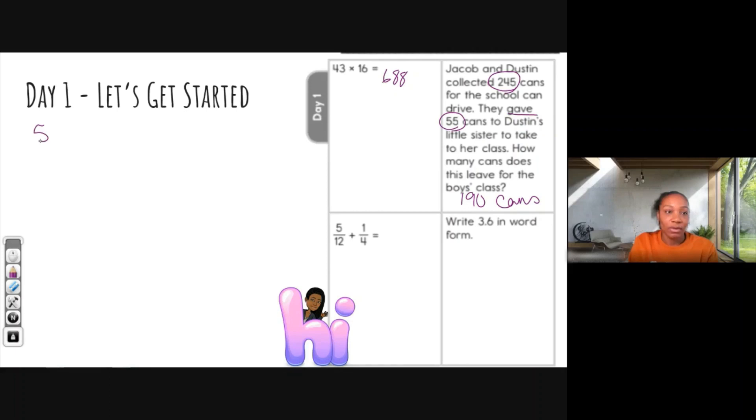All right, here we go. So I have 5/12, okay, plus 1/4. I'm going to draw my four square. I'm going to use this whole entire space. And I'm looking at my denominators because now I need to find the least common denominator, right? So we have 4 and we have 12. I'm going to find the multiples.